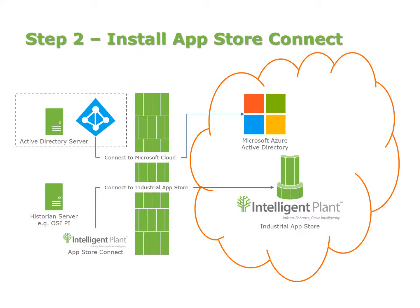Once you've got that, the next step is to install and set up App Store Connect. App Store Connect will normally be installed close to the Historian to make it most efficient. When you connect, App Store Connect will require you to log in as a user — the person who administers App Store Connect, most likely someone in your Active Directory. You would log in with a user, which could be a service user, and that would be the owner of the connection that can then share it with other App Store users who are in the Active Directory.